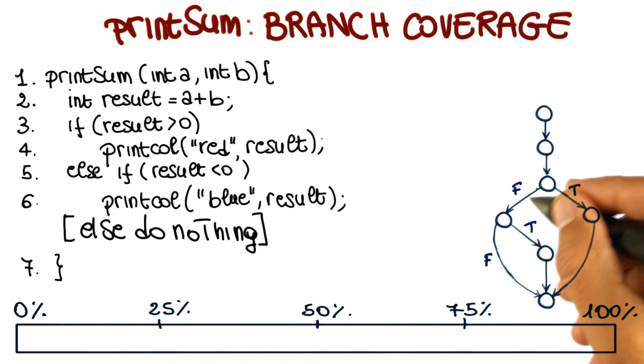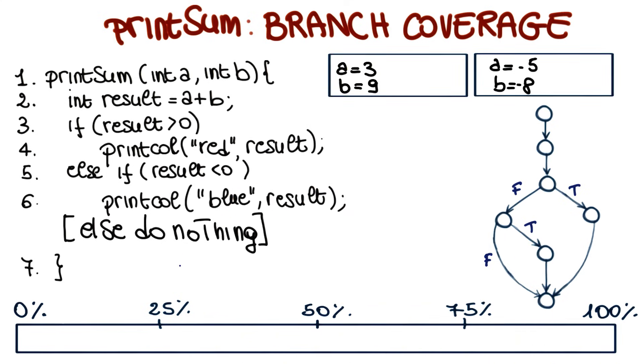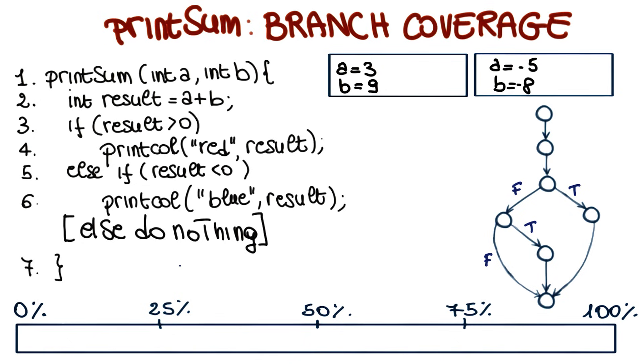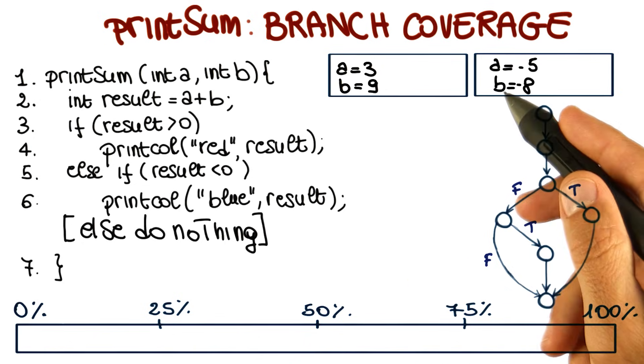So we have one, two, three, and four branches. So now let's bring back our current set of test cases. We had two test cases, the ones with which we achieved 100% statement coverage. Let's see what happens in terms of branch coverage when we run these test cases.